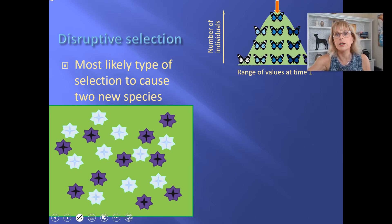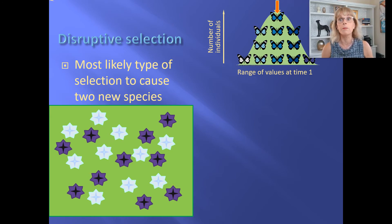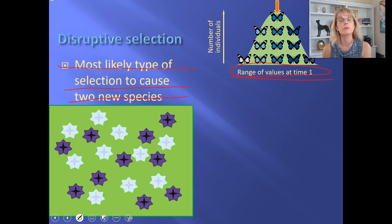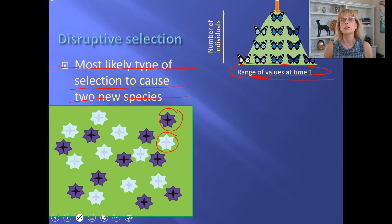Now, disruptive selection. The pocket mice activity in lab is an example of disruptive selection and might lead to two different species. Here is an example with a population of butterflies — we'll put them in a greenhouse with purple flowers and pale, almost white flowers, and birds that want to eat butterflies. Let's see what happens.